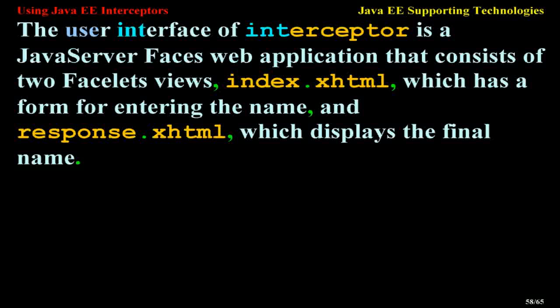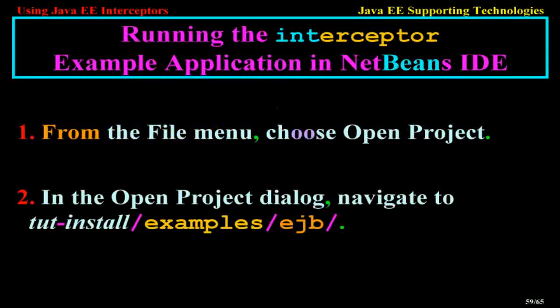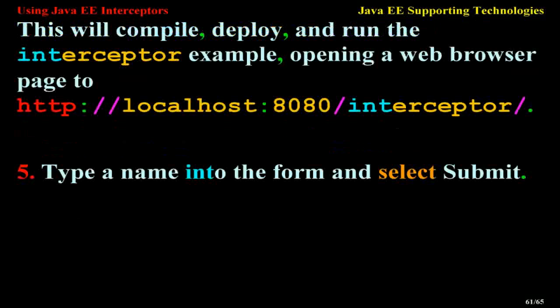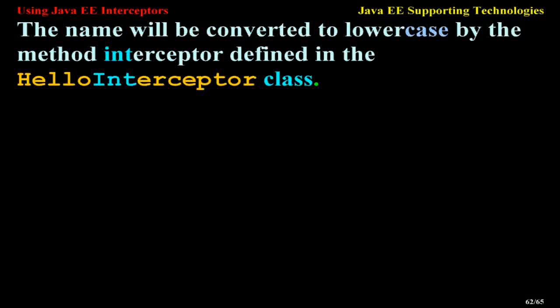The user interface of the Interceptor example is a JavaServer Faces web application consisting of two Facelets views: index.xhtml, which has a form for entering the name, and response.xhtml, which displays the final name. To run the Interceptor example in NetBeans: from the File menu, choose Open Project; navigate to tut-install/examples/ejb; select the interceptor folder and click Open Project. In the Projects tab, right-click the interceptor project and select Run. This will compile, deploy, and run the example, opening a web browser to http://localhost:8080/interceptor. Type a name into the form and select Submit — the name will be converted to lowercase by the HelloInterceptor class.